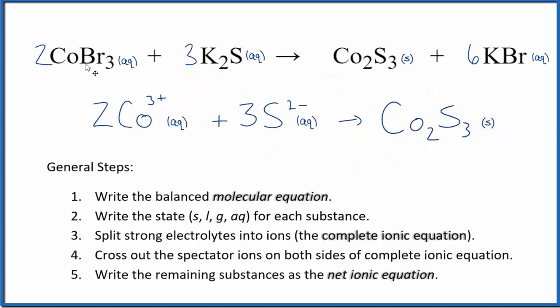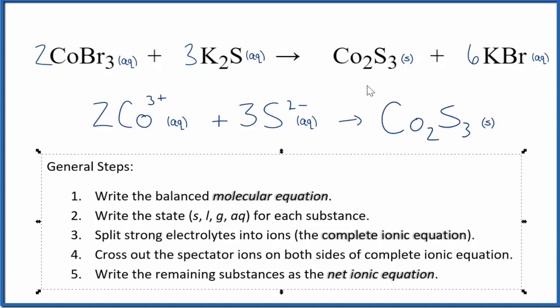Note that the charges are balanced. Two times three plus, that gives us a six plus. Three times the two minus, that gives us a six minus. That adds up to zero. Reactants, net charge of zero. And the products, this cobalt(III) sulfide, that is a neutral compound, so net charge of zero.